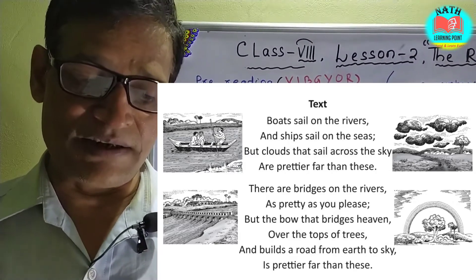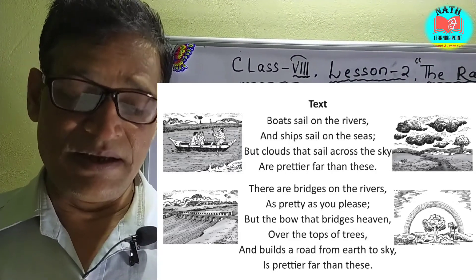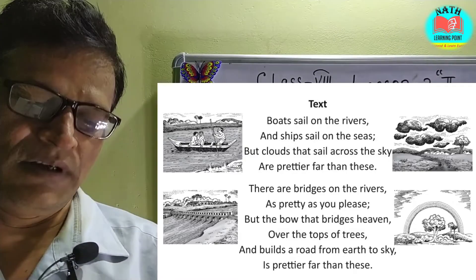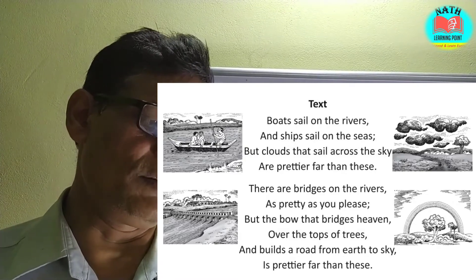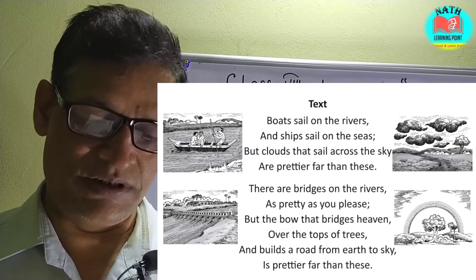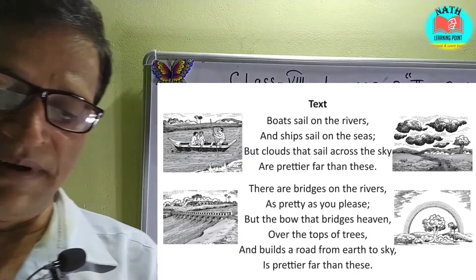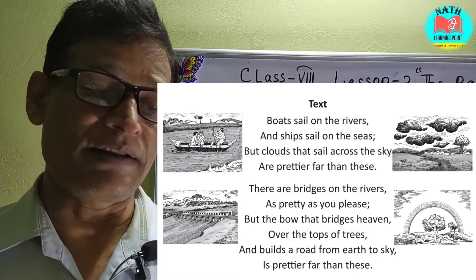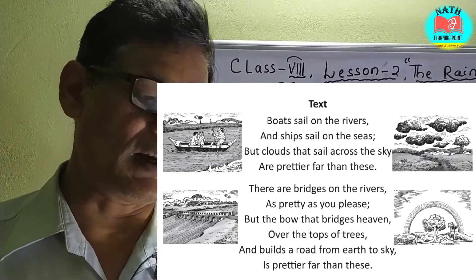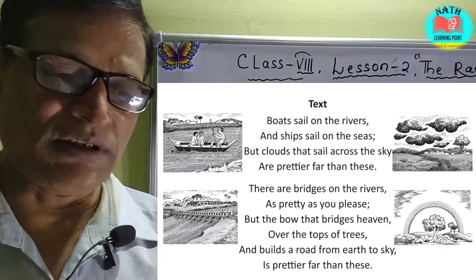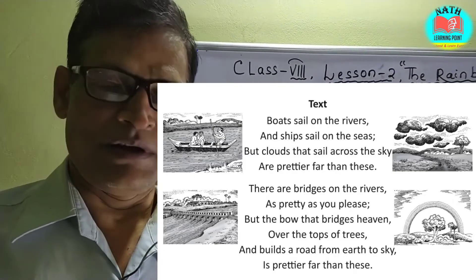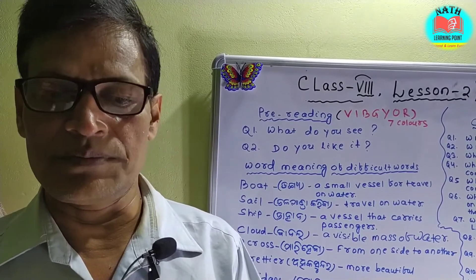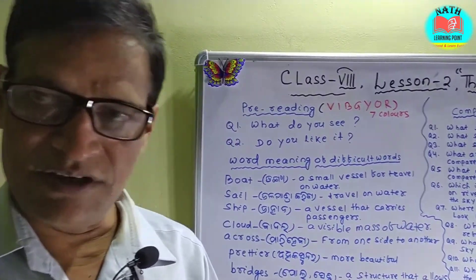As pretty as you please. But the bow that bridges heaven over the tops of trees and builds a road from earth to sky is prettier far than this. This poem is written by John Keats.